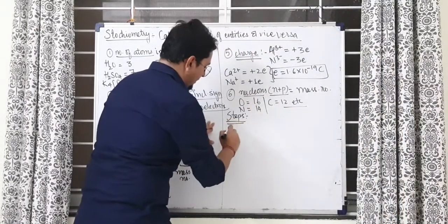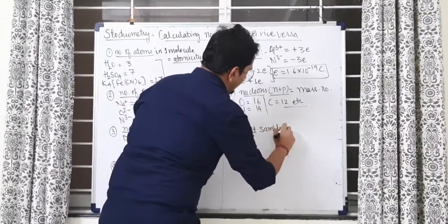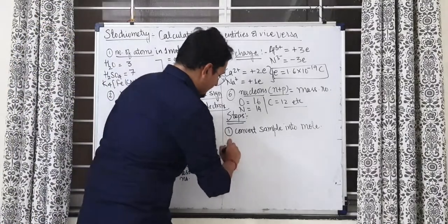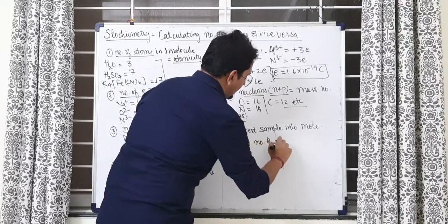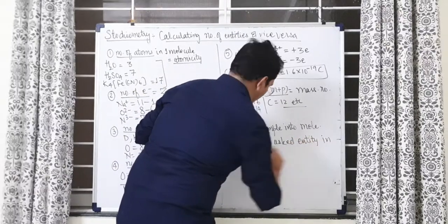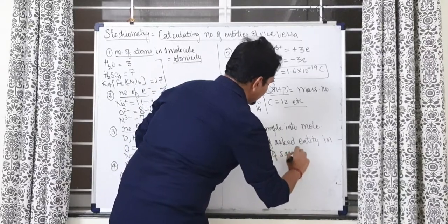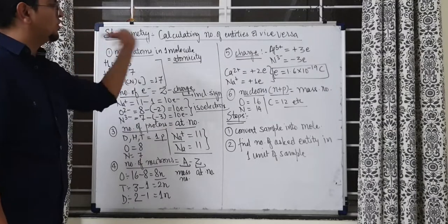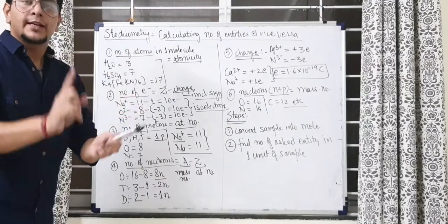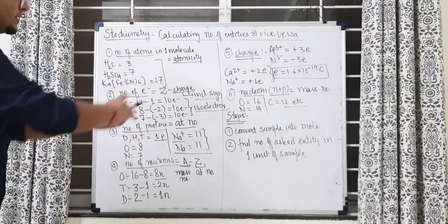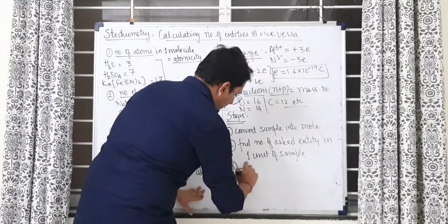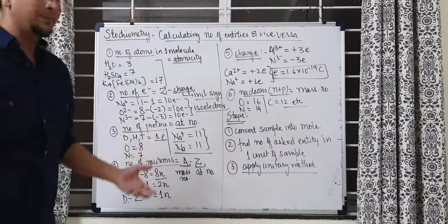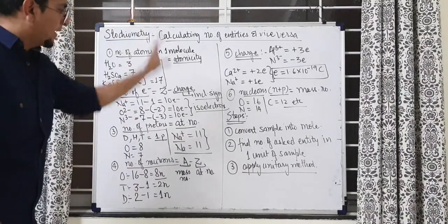Now steps in the mole concept. Number one. Convert sample into moles. In the previous video we learnt how to convert any given sample into moles. Step number one. Step number two. Find number of asked entity in one unit of sample. In one unit of the molecule, one unit of the atom, one unit of the ion. Whosoever is the asked entity. They asked atom, electron, proton, neutron, charge or nucleon. Whatever they ask you. Find the number of that in one entity. That means find this. What I just now trained you to find. You have to find this in the second step. Step number three. You have to apply unitary method. Now those who don't know what is unitary method, don't worry. Maybe you already know it. Maybe you are not familiar with this name. I will tell you also while solving the question what is unitary method. But anyway, these are the steps we have to follow.